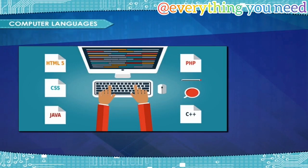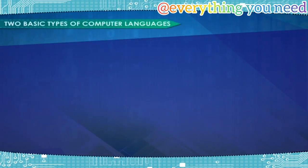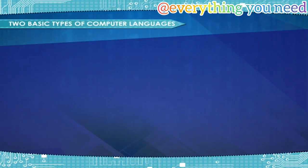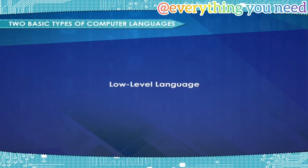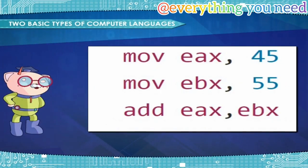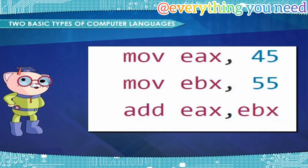Basically, languages can be divided into two categories. Two basic types of computer languages: Low-level language — a language that corresponds directly to a specific machine. There are two types of low-level languages.